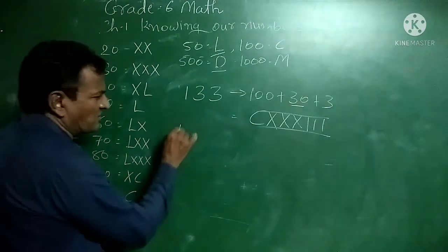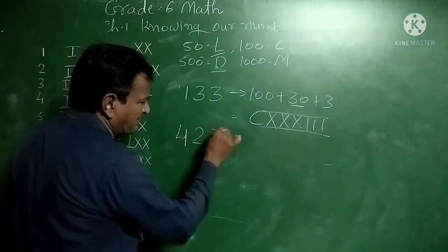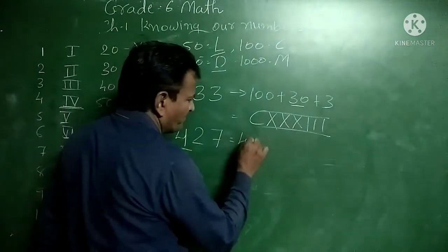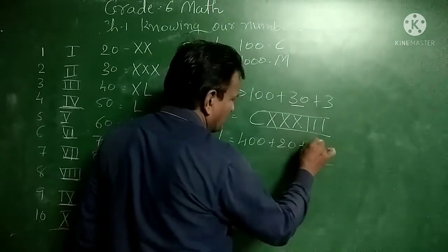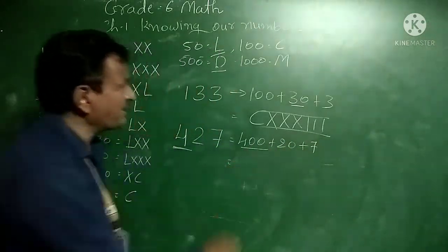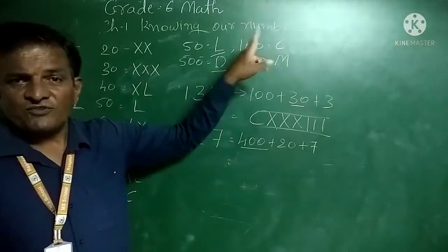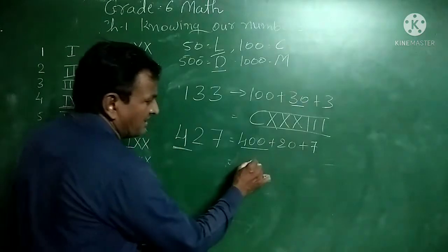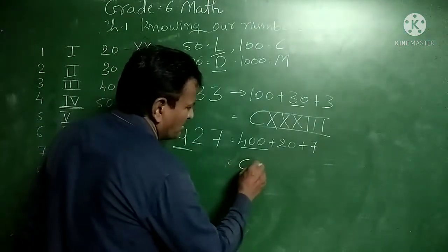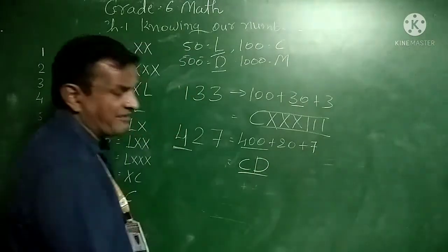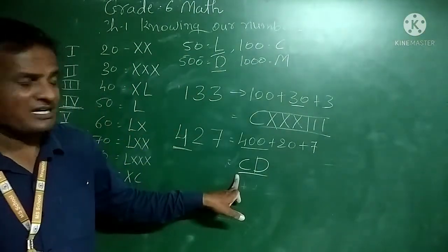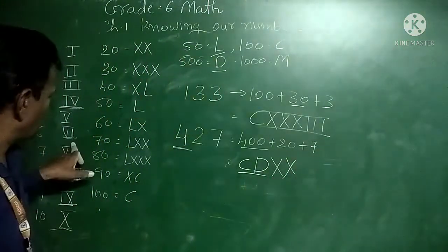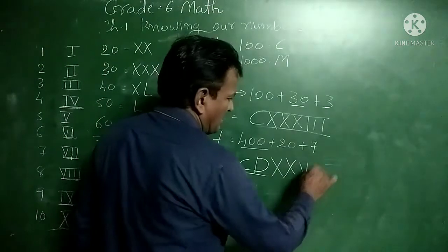Suppose we write 427. We write it as 400 plus 20 plus 7. For 400, we do not write CCCC (we cannot repeat C four times). Instead, we write CD — D is 500, so 500 minus 100 equals 400. For 20 we write XX. For 7 we write VII. So 427 in Roman numerals is CDXXVII.